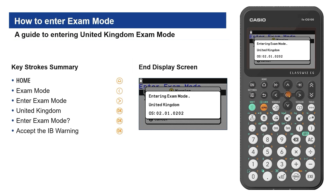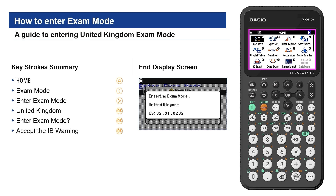A pop-up appears confirming that the handset is entering United Kingdom exam mode, and the handset restarts with a magenta screen border and flashing R in the status bar.